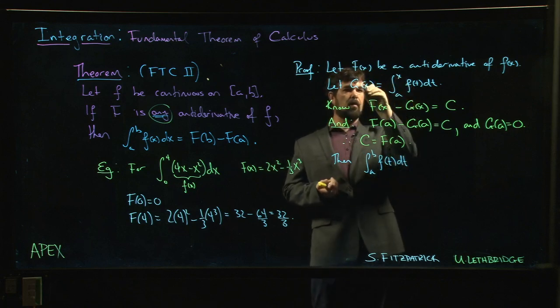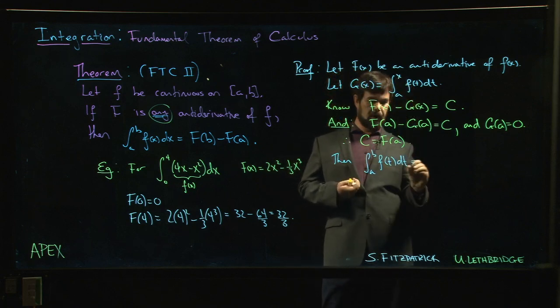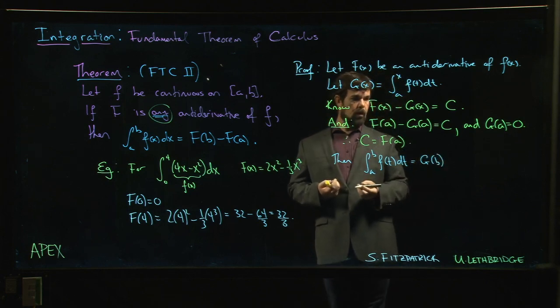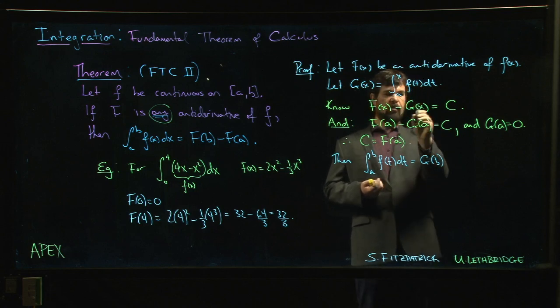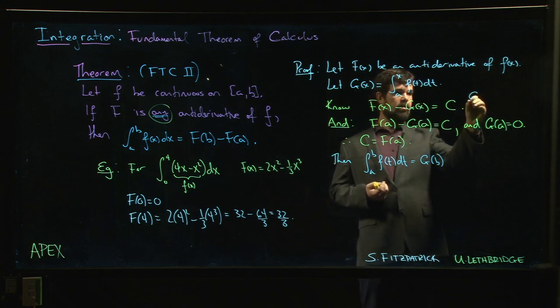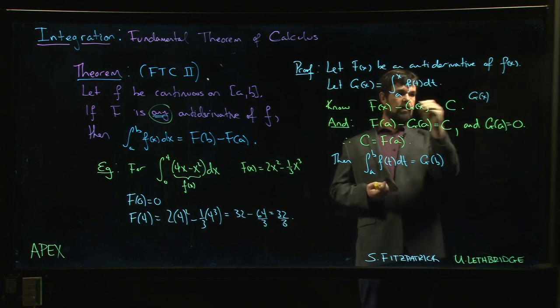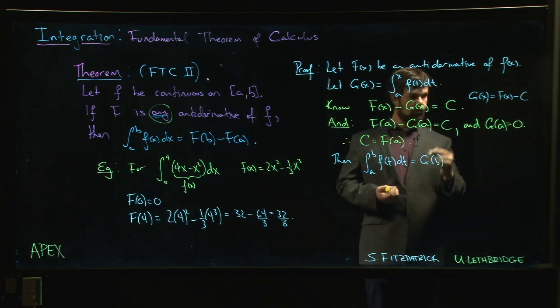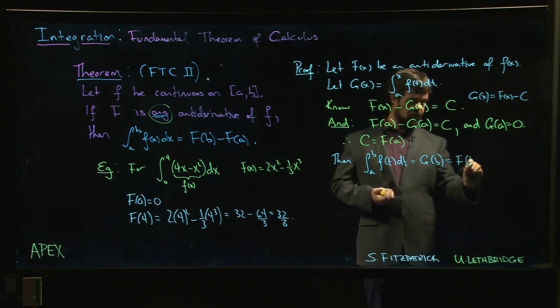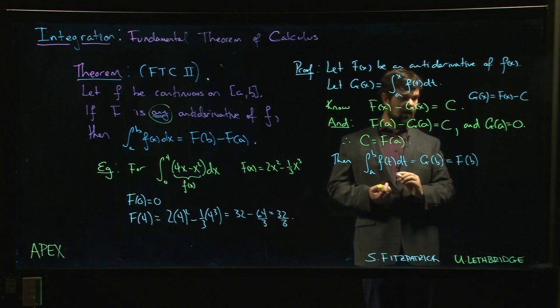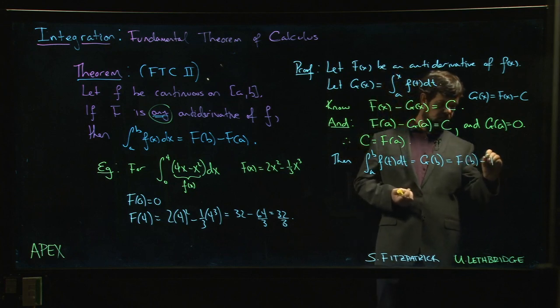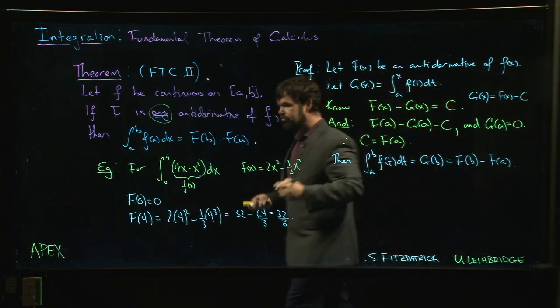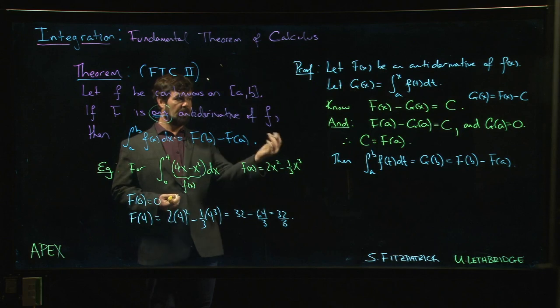That means we're putting x equal to b up here, which is the same as putting x equal to b over there. This is G(b). What's G(b)? Well, let's see, we get to rearrange this equation, right? G(x), if I move that over, bring the C over, G(x) is F(x) minus C. So G(b) is F(b) minus C, but what's C? C is F(a).